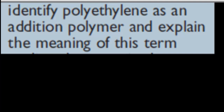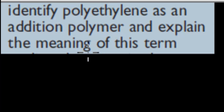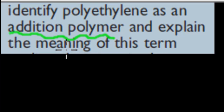Welcome back. In the last video we talked about how ethylene is a monomer which can combine with different monomers to form a polymer. What we're going to do in this video is talk about polyethylene again. It says: identify polyethylene as an addition polymer and explain the meaning of this term. There are two parts to this — we need to know that ethylene can make an addition polymer, and also be able to explain the term addition polymer.